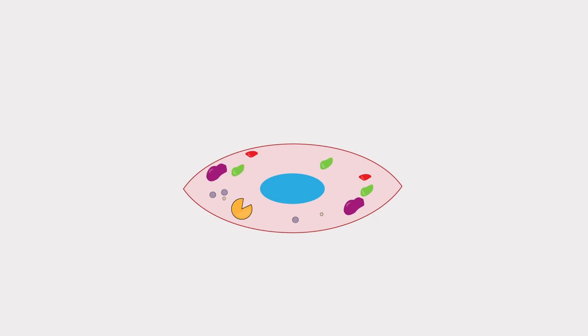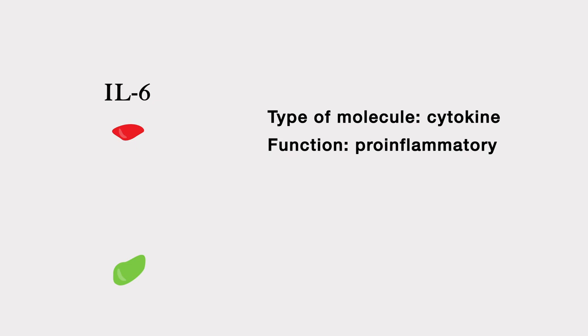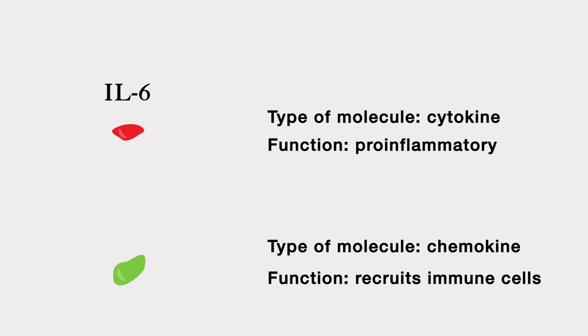Next, we'll assess the third hallmark of senescence, the SASP. Remember that the SASP is made up of different proteins and molecules that both aid in tissue repair, but also contribute to chronic inflammation. When confirming whether senescence induction has worked, we can check for the expression of some core SASP factors. For our experiment, we will assess whether the senescent cells express inflammatory factors like interleukin-6, also known as IL-6, as well as a type of molecule called a chemokine, which specifically help recruit immune cells to the site of cell damage or infection.